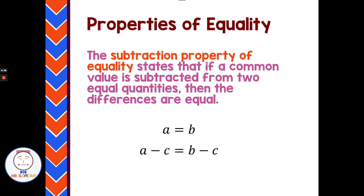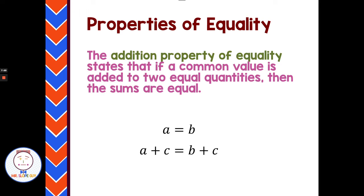Now we have the properties of equality. When solving equations, we're allowed to add, subtract, multiply, or divide anything we want to either side of an equation and it remains equal. The subtraction property of equality says if A equals B, then A minus C equals B minus C. The addition property of equality says if A equals B, then A plus C equals B plus C — I can add C to both sides and it remains equal.